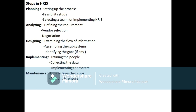After examining the flow of information, the next part is assembling the subsystems — deciding how information should be passed down to the subsystems. As there are many subsystems, we decide to which subsystem to assemble: competency planning, recruitment, training and development, or career planning. Next is identifying the gaps — if there is any gap in the flow of information, we have to identify and fill those gaps.